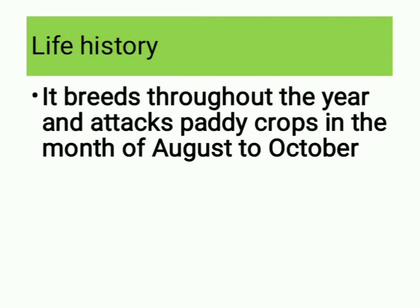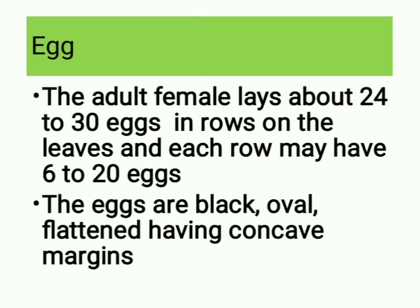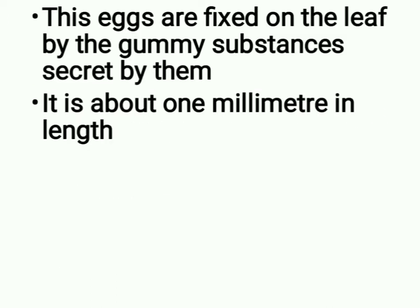Life history: it breeds throughout the year and attacks paddy crops in the months of August to October. Egg: the adult female lays about 24 to 30 eggs in rows on the leaves, and each row may have 6 to 20 eggs. The eggs are black, oval or flattened, having concave margins. These eggs are fixed on the leaf by gummy substances secreted by them. Eggs are about 1 mm in length.